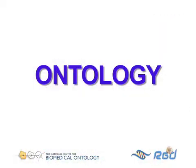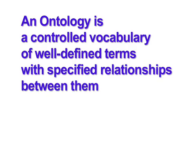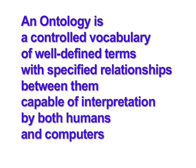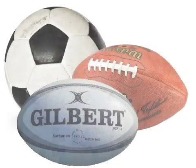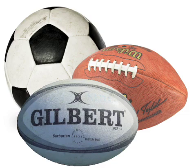An ontology is a particular kind of controlled vocabulary. We will define it like this: an ontology is a controlled vocabulary of well-defined terms with specified relationships between them, capable of interpretation by both humans and computers. It's important that each term be defined, so that there's no confusion over what concept is being conveyed.